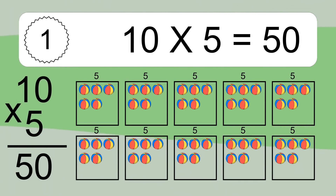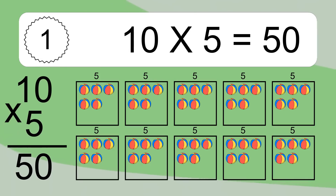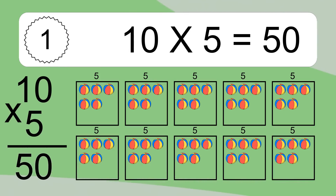We have 10 boxes and each box has 5 colorful balls inside. If you count all the balls in all the boxes together, you will have 10 times 5 balls. This equals 50 balls.